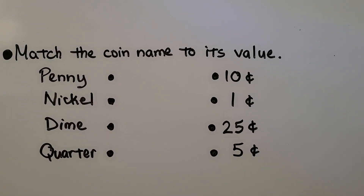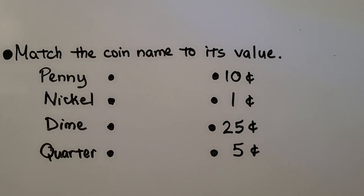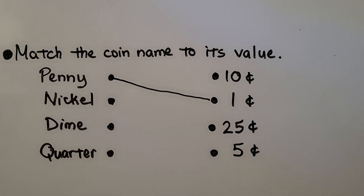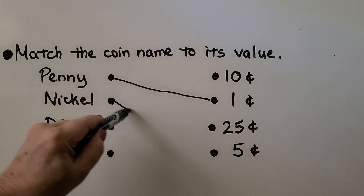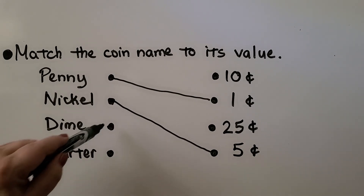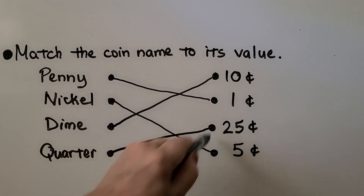We need to match the coin name to its value by connecting the dots to the correct value. A penny — if you said one cent, you're right, we draw a line there. A nickel — if you said five cents, you're right. A dime — if you said 10 cents, you're right. And a quarter has the value of 25 cents.